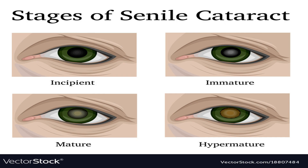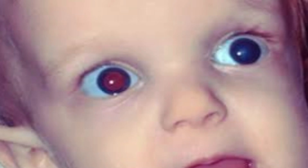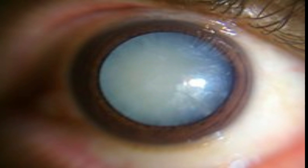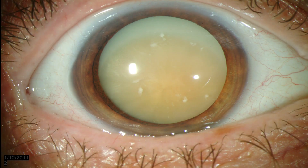Senile cataract is clouding and opacification of the natural lens due to aging. Congenital cataracts are formed in babies while developing in the womb during the gestation period due to infection, injury, or developmental deficiencies in the womb, or they can form in childhood. Secondary cataracts happen as a result of other medical conditions like diabetes. They can also result from being around toxic substances, ultraviolet light, or radiation, or from taking medicines such as corticosteroids or diuretics. Traumatic cataracts form after an injury to the eye. Other things that can increase the risk of getting cataracts include increased UV light exposure, smoking, and heavy drinking.